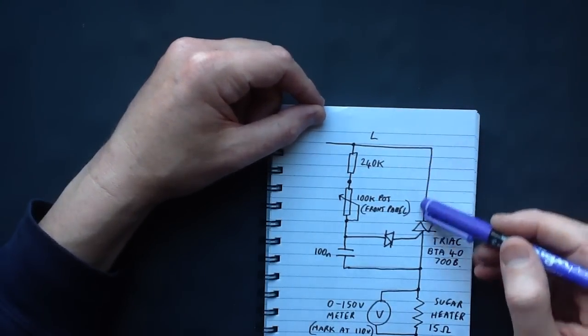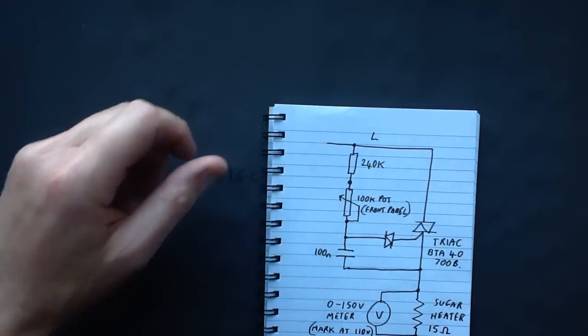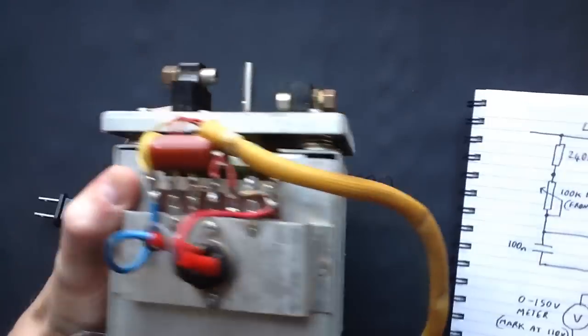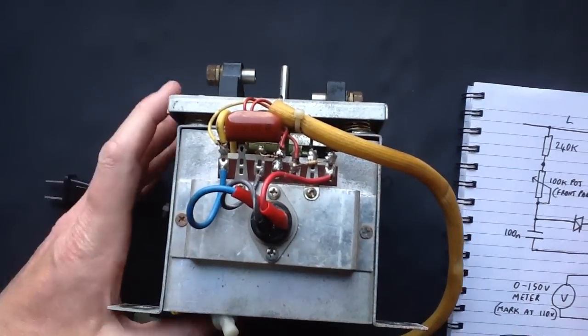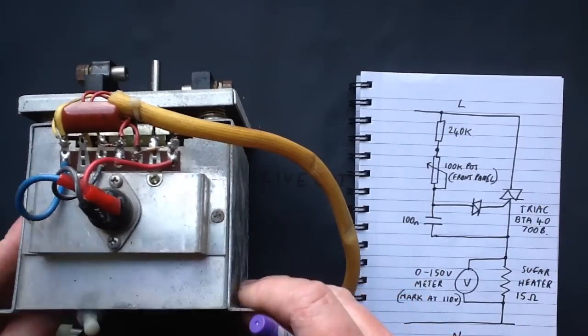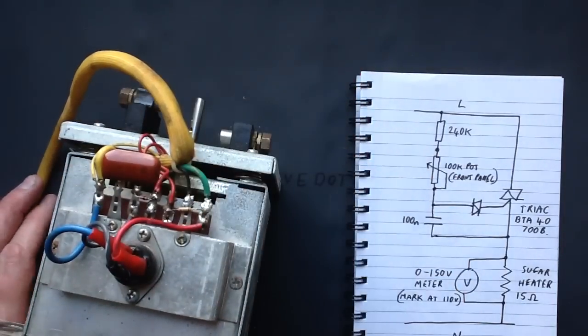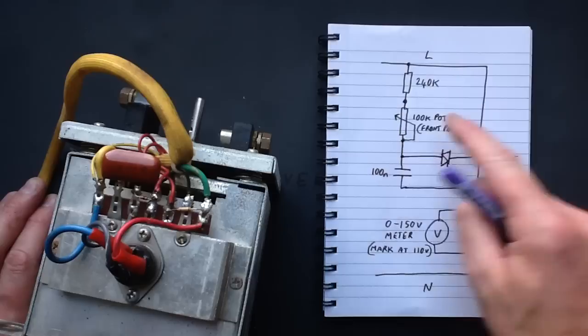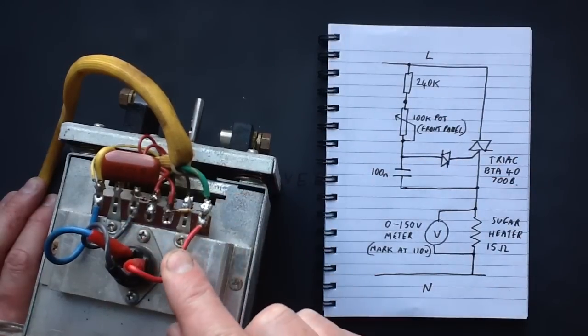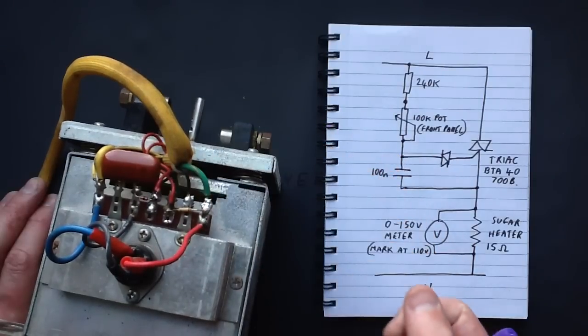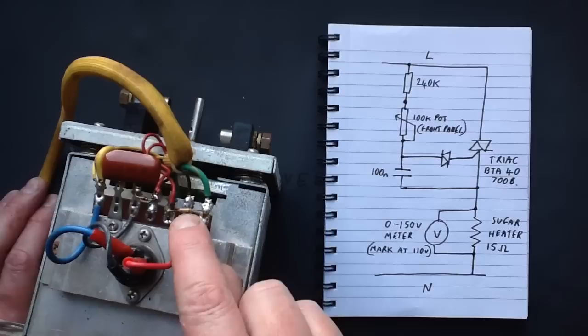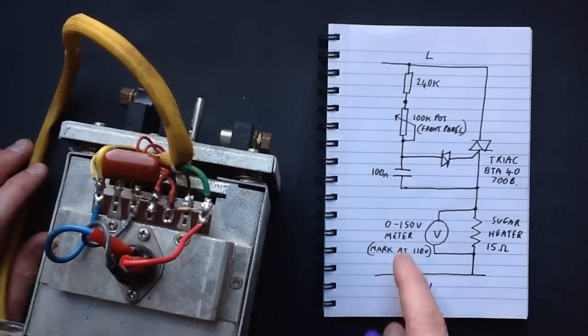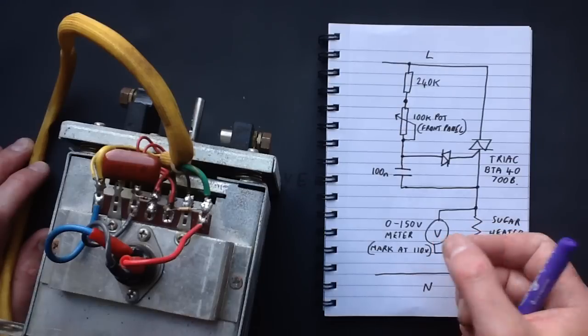So you've got the live, it goes to the big huge stud triac, that's this thing here. I'll just point the components out. From the live, it goes straight to the stud triac, that's this red wire here, notice the green and yellow wire used for live, that's not great, that's earth normally. There's a 240k resistor here, then the wire goes along this wiring loom, with the two red wires, and it goes to just a 100k potentiometer on the front of the panel, that can be used to adjust the heater power.